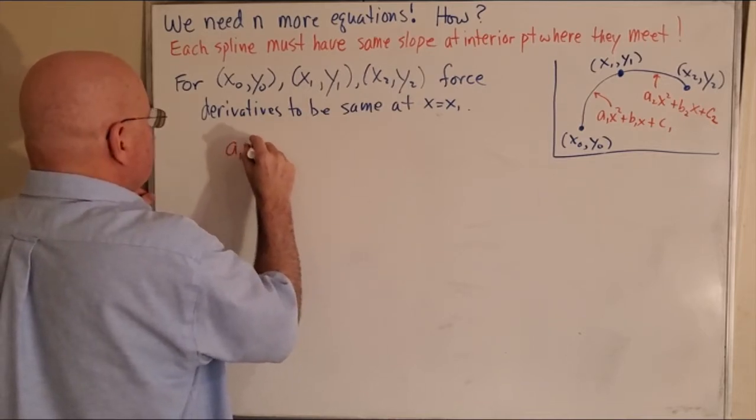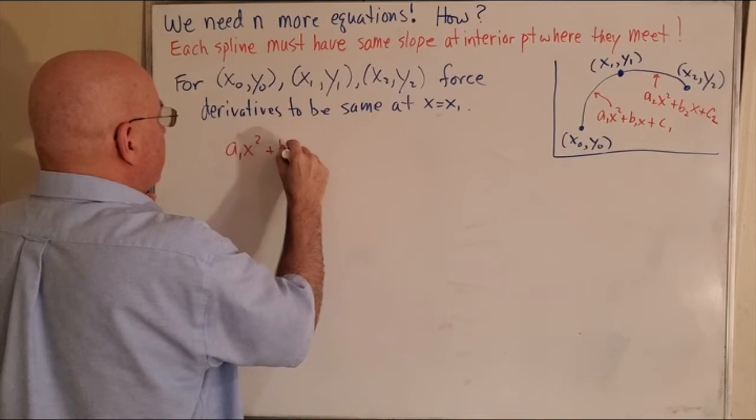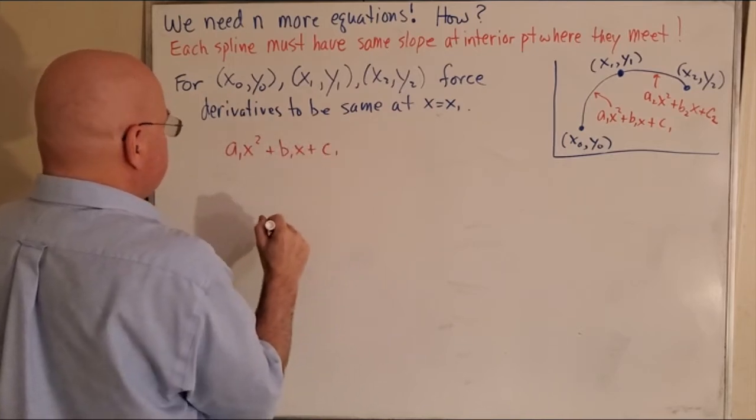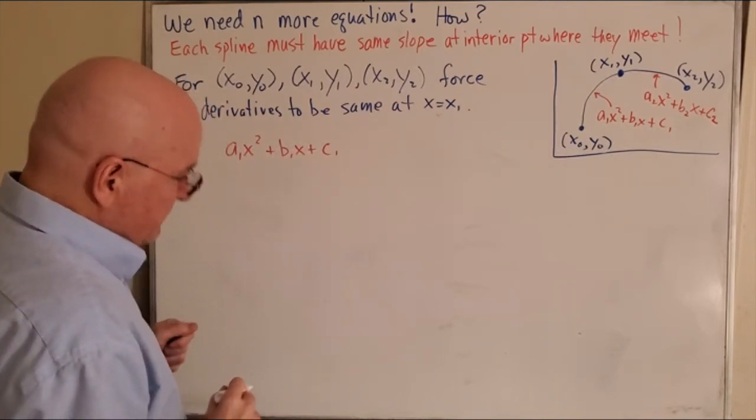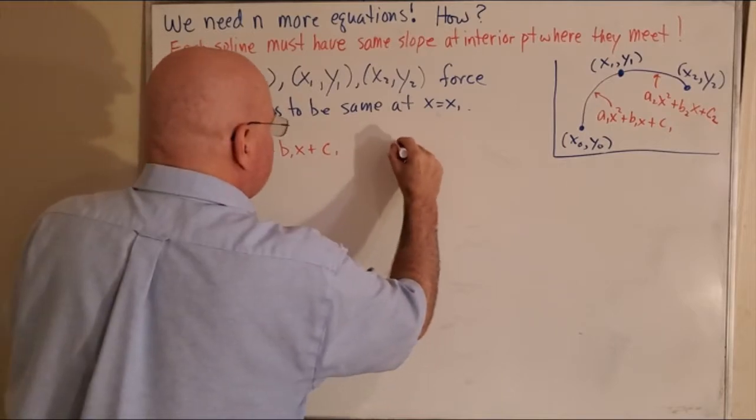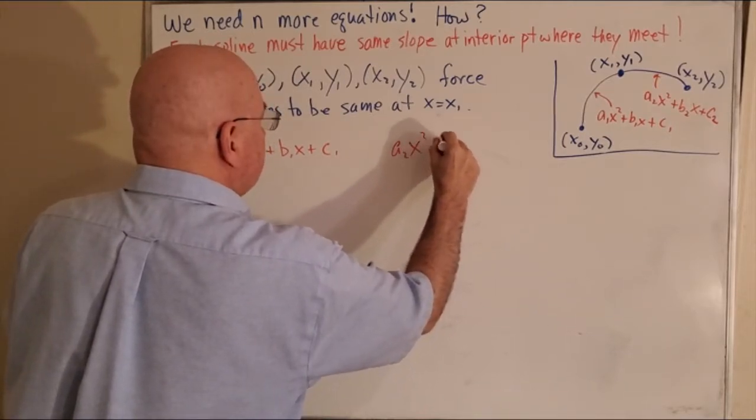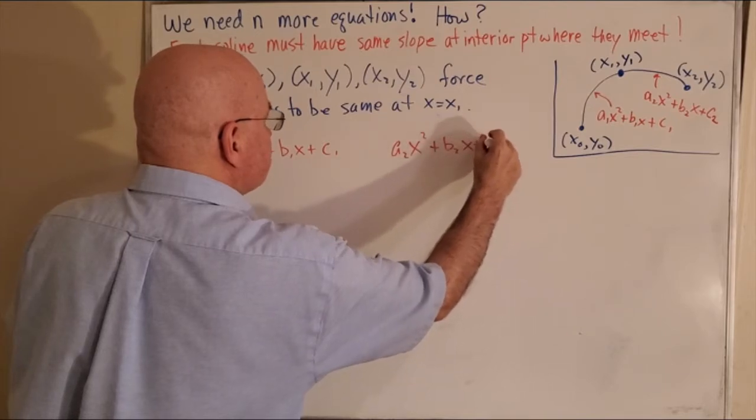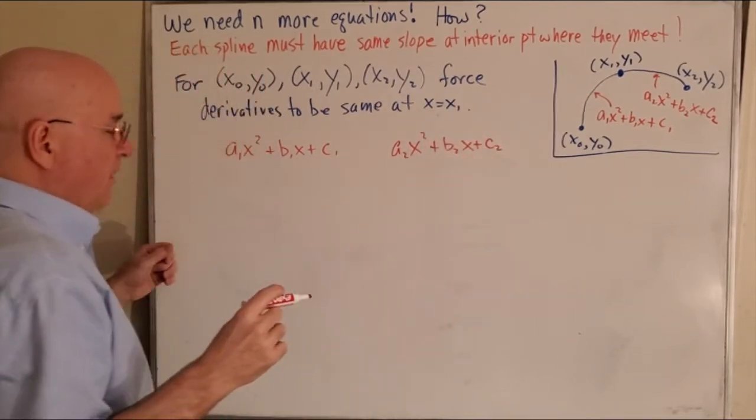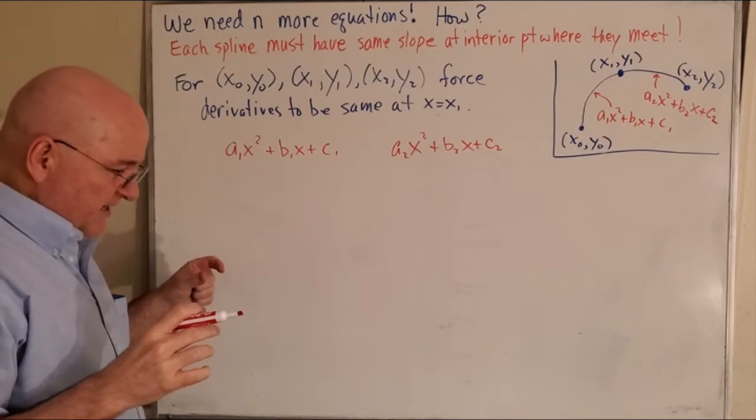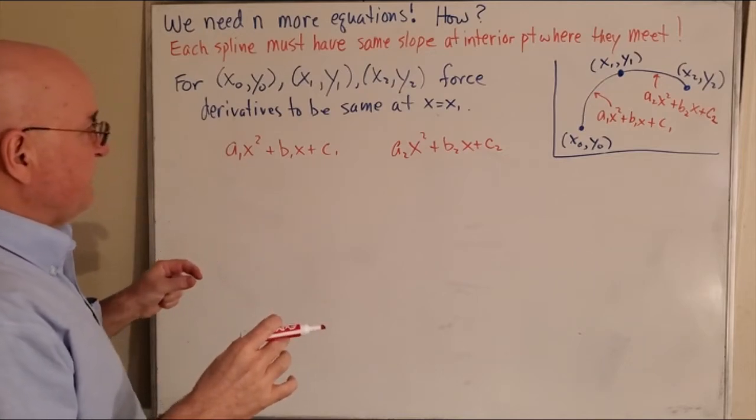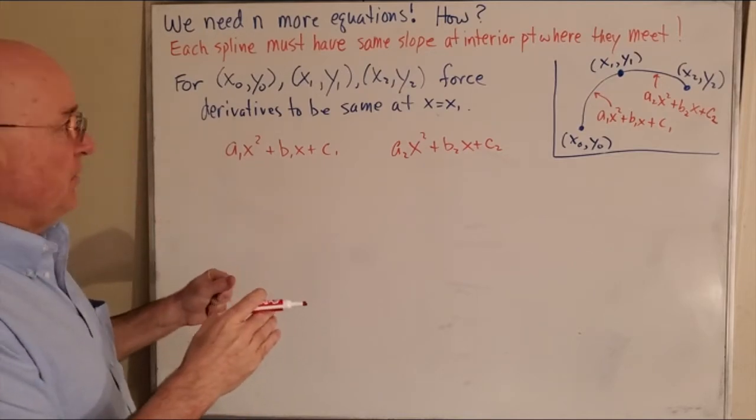a1x² + b1x + c1, and I'm going to write way over here a2x² + b2x + c2. So when I take those two equations and take their derivatives, I want to set them equal to each other.